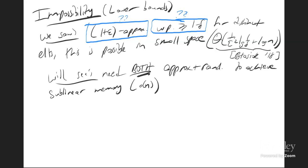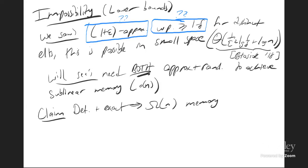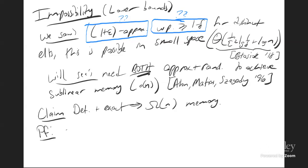First, let me show why you cannot hope to solve the problem deterministically and exactly. You're going to need at least one of these two. Claim: deterministic plus exact requires linear memory. The fact that you need both approximation and randomization was first shown by a result due to Alon, Matias, and Szegedy. The proof is going to be via an encoding argument. I'll also show a second proof phrased in the language of communication complexity.